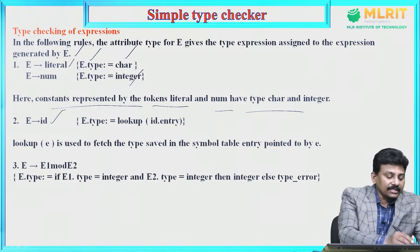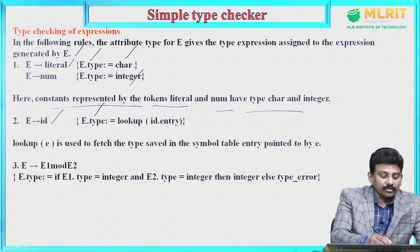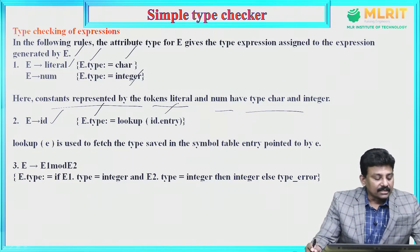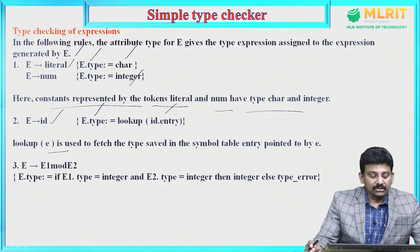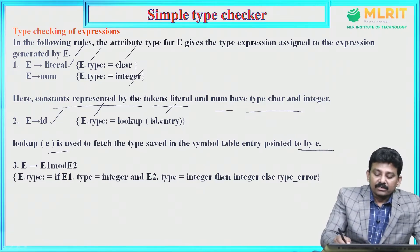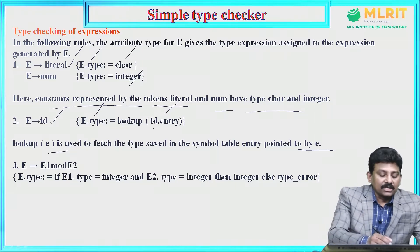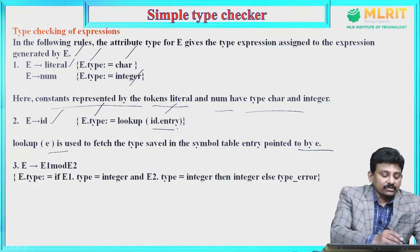Next, E derives id is a rule. The semantic action — translation rule — is E.type = lookup(id.entry). The lookup function is used to fetch the type of the saved symbol in the symbol table. That means the saved type from the symbol table pointed to by E: there is a symbol table entry where the variable type is stored, and we fetch that identifier type and assign it to E.type.